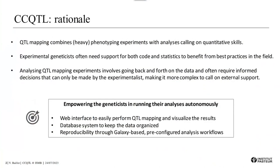In practice, phenotyping experiments are heavy to conduct and all the analysis steps that follow require quantitative skills. Experimental geneticists who perform QTL mapping often need support on that front to benefit from best practices in the field. Such support is tricky to provide for two reasons: first, because analyzing a QTL mapping experiment requires lots of back and forth with the data, testing different parameters and model layers; and second, because decisions like choosing a covariate can only be made by the person who knows the trait best. Building on that, we want to make geneticists autonomous in analyzing their QTL mapping experiments, and for that we set up CCQTL, which combines a web interface, a database system, and most importantly warranted record tracking and reproducibility — built on Galaxy per-world analysis workflows.